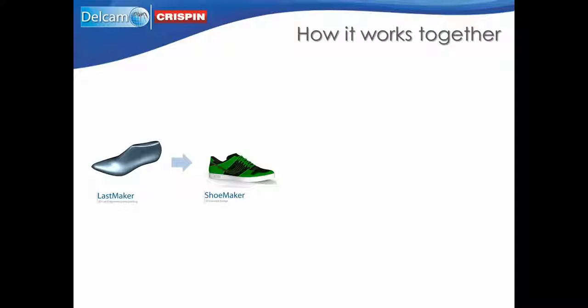It's likely that your designers usually provide sketches produced by hand or in a 2D design package such as Adobe Illustrator. To make creating your 3D design as quick and easy as possible, Shoemaker allows you to easily wrap a 2D JPEG or Adobe Illustrator file onto the surface of the last. It will immediately convert vectors into 3D style lines so you can make necessary alterations quickly and easily. Alternatively, you can use a digitizer, touch screen or your mouse to draw style lines directly onto the last.